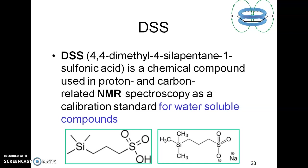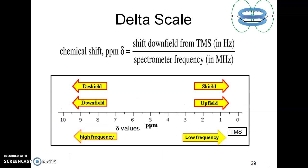Other than TMS, DSS — dimethylsilopentane sulfonic acid — can also be used as a reference standard for water-soluble compounds. DSS is formed when one of the CH₃ groups of tetramethylsilane is replaced by pentane sulfonic acid. These are the two reference standards used in NMR. The delta value is the shift downfield from TMS in hertz divided by the RF frequency of the spectrophotometer in megahertz. The delta scale runs from 0 to 10 ppm. At zero there is the sharp peak of TMS, and protons near TMS are upfield and of lower frequency, while protons far from TMS are downfield and of higher frequency.